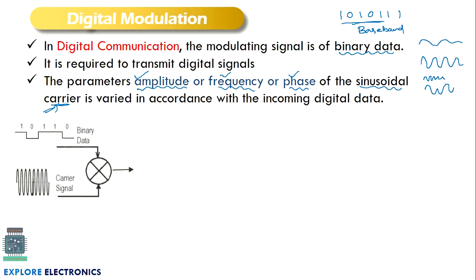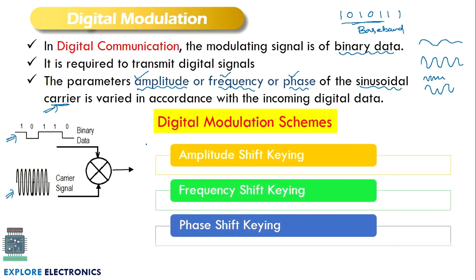Let us understand the modulation by taking binary data as the message signal and an AC signal as the carrier signal. Once given to the product modulator, the output will be ASK, FSK, or PSK depending on the modulation scheme. These digital modulation schemes are: ASK — amplitude shift keying, FSK — frequency shift keying, and PSK — phase shift keying. Let us go through these one by one.